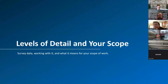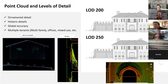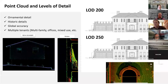Now let's talk a little bit about levels of detail and scope, and what the terrestrial and mobile scanners are capable of. This also impacts your time on site, time drafting, and fees if you're hiring a third party for scanning and modeling or drafting. Ornamental detail, historic details, global accuracy, multiple tenants, multifamily and mixed-use spaces — all of those might be reasons that a terrestrial scanner may be a better option.